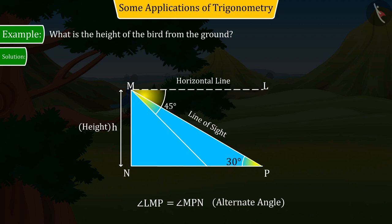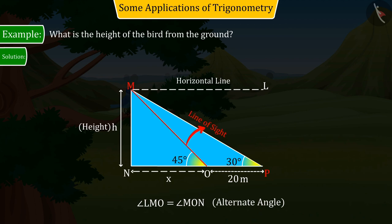And in the second case, when the rat travels 20 meters towards the tree, the angle of depression becomes 45 degrees, assuming the distance from point O to N is x meters, where the angle of depression formed by the line of sight and horizontal line is 45 degrees.